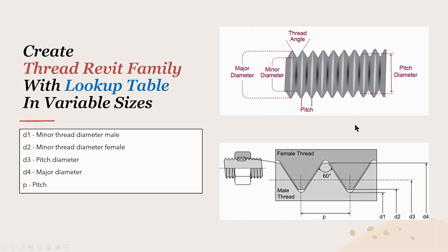Hello everyone. Today's tutorial is creating a Thread Revit family using a lookup table. You can see in the picture there are major diameter, minor diameter, pitch, thread angle, and pitch diameter. When we create parameters, major diameter is considered as nominal diameter, and there's no need to include pitch diameter. Okay, let's start to create.